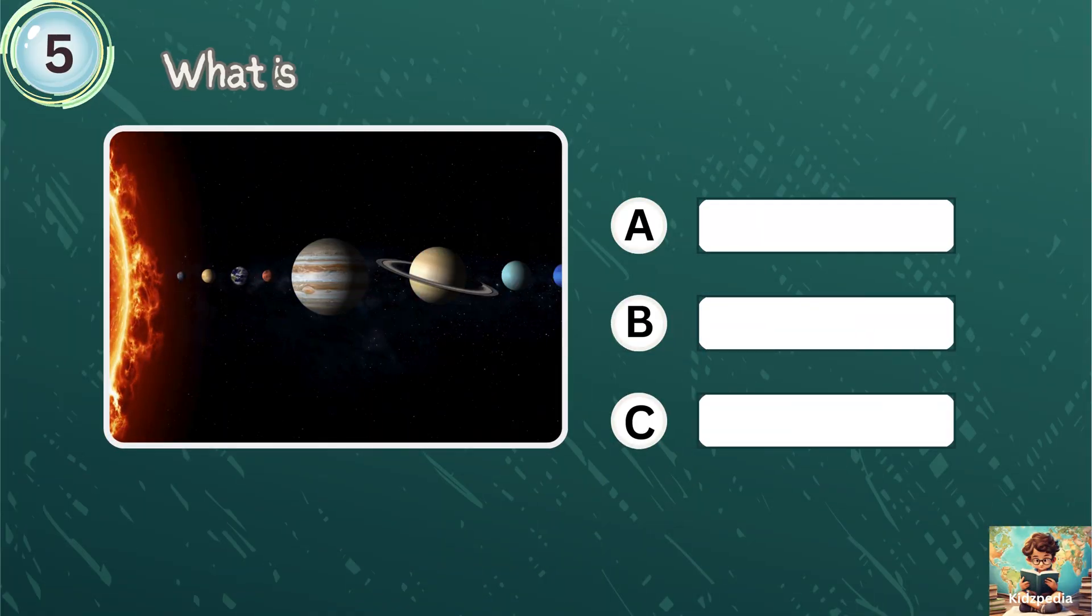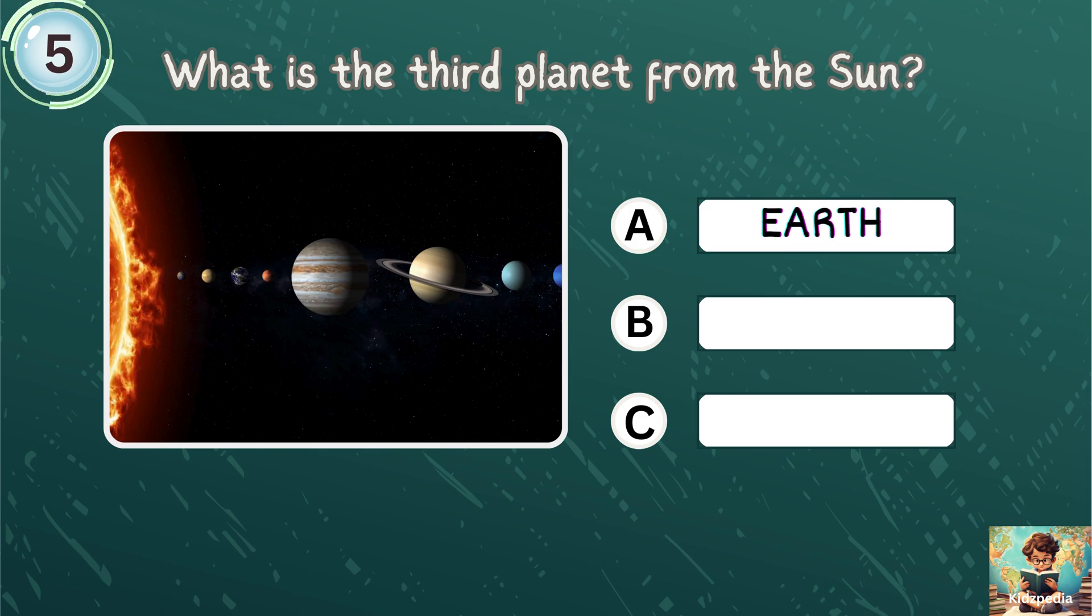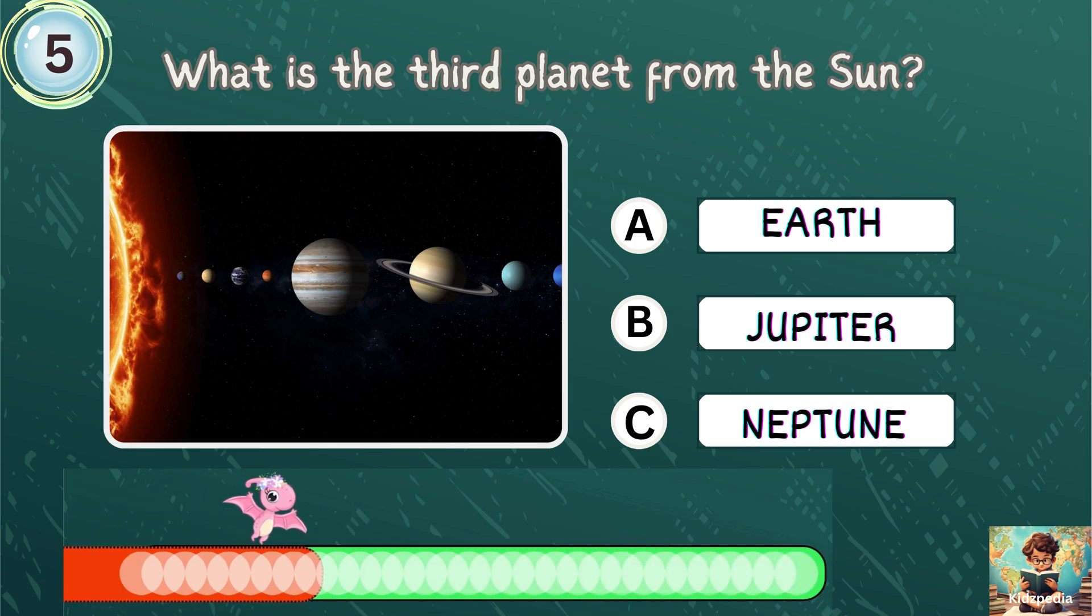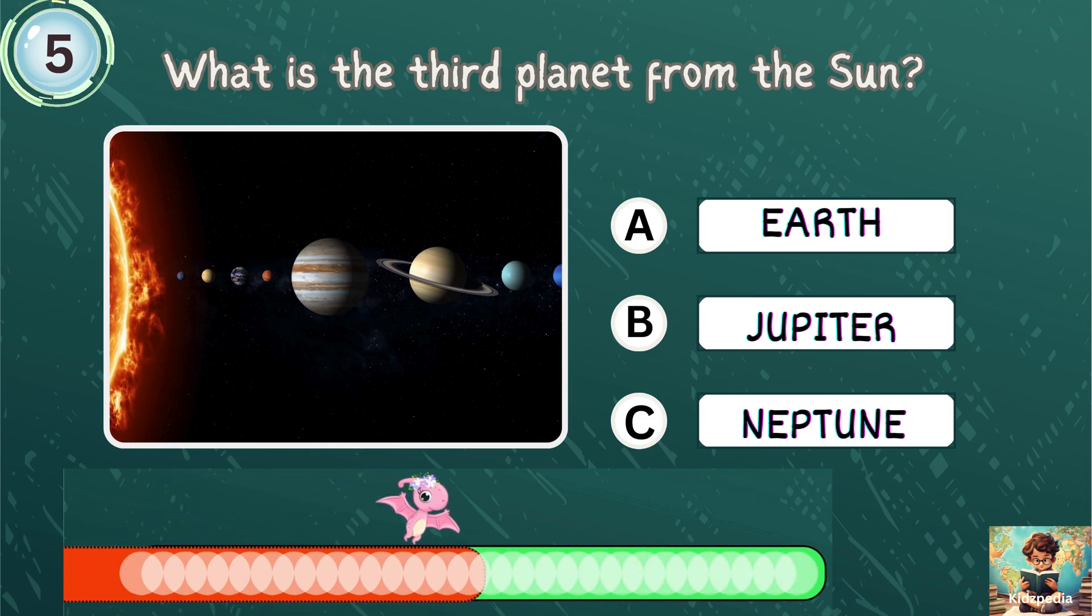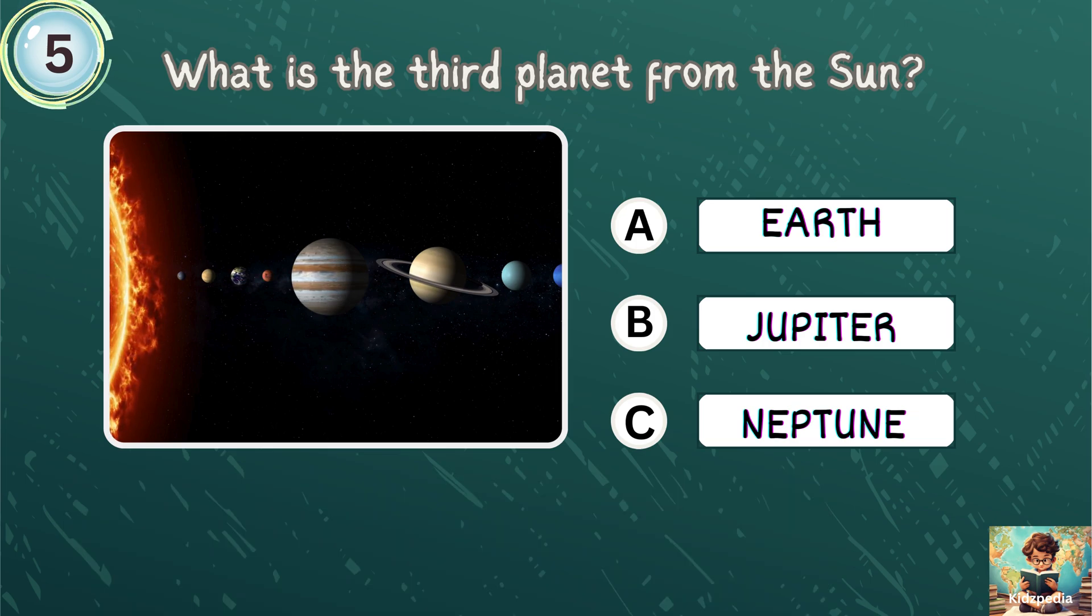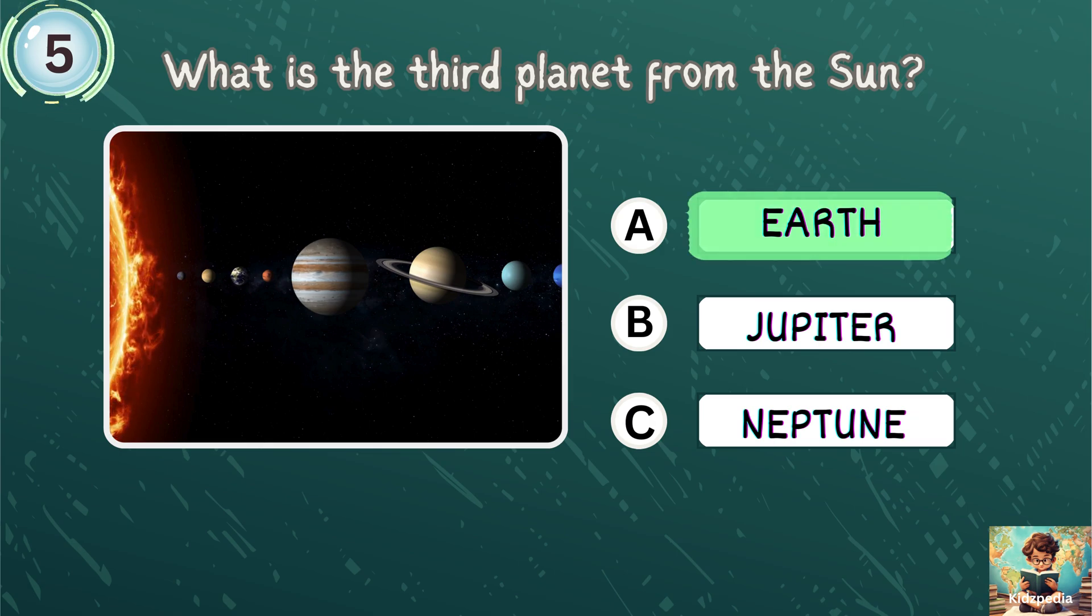What is the third planet from the sun? Earth, Jupiter, Neptune. Correct answer is Earth. Earth is the third planet from the sun.